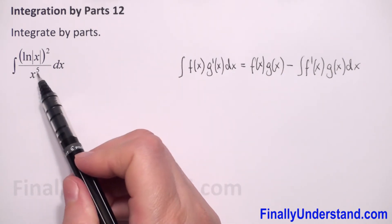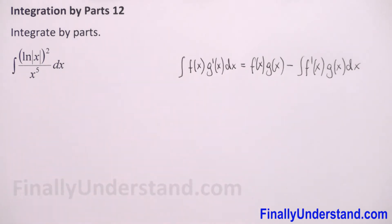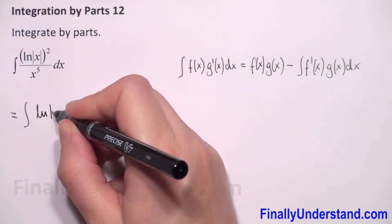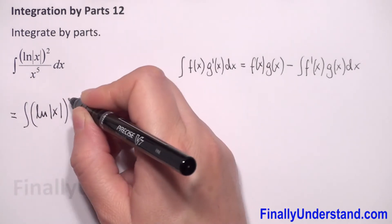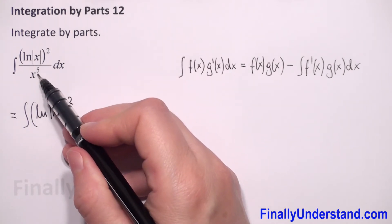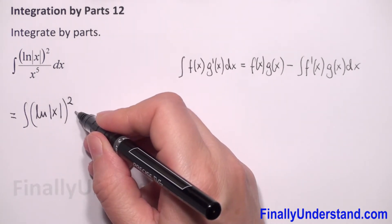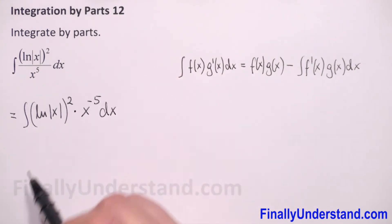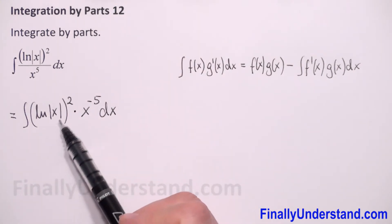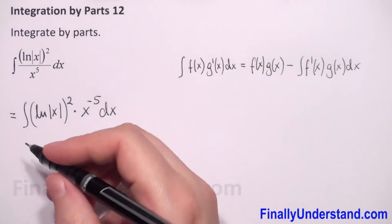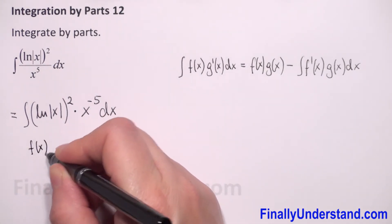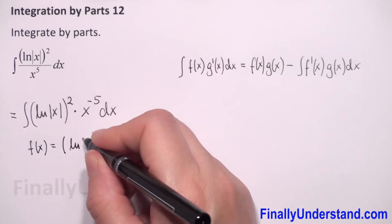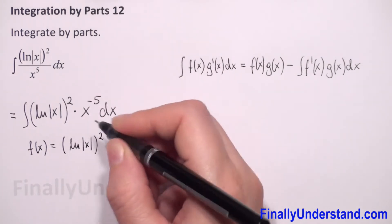so first I will change this to a product. This is equal to the integral of the natural logarithm squared of |x|, and we have x to the fifth power in the denominator, so we can write this as times x to the negative 5th power dx. Now we have multiplication, and to reduce this natural logarithm, I will put f(x) equal to the square of the natural logarithm of |x|.